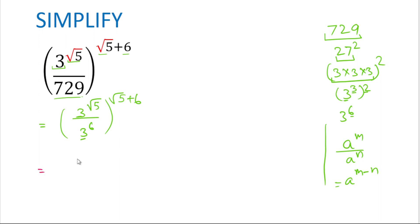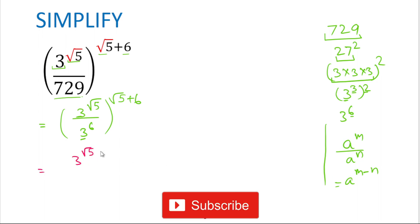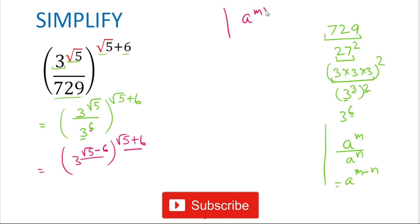The power in the numerator is square root of 5, and we subtract 6, giving us square root of 5 minus 6 inside the bracket. Then we apply the rule (a^m)^n equals a^(m times n), so the outer power of square root of 5 plus 6 gets multiplied with the inner power.